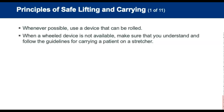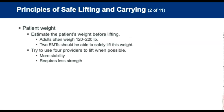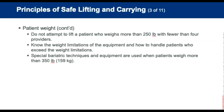Whenever possible, use a device that can be rolled to move the patient. When a wheeled device is not available, follow the proper guidelines for carrying a patient to the stretcher. Estimate the patient's weight before lifting — adults often weigh between 120 to 220 pounds, and two EMTs should be able to safely lift this weight, though use four providers when possible. Do not attempt to lift a patient who weighs more than 250 pounds with fewer than four providers. Special bariatric techniques, equipment, and resources are generally required for patients weighing more than 350 pounds.